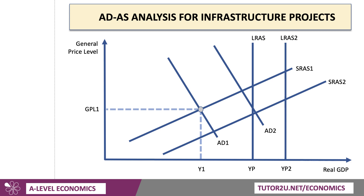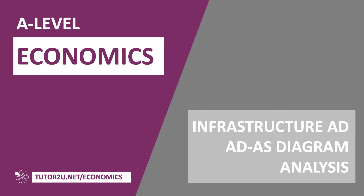Infrastructure also increases the productive capacity of the economy, shifting out long-run aggregate supply. So we've got three shifts in the curves. This allows the economy to operate at a higher equilibrium national income — Y2 — and the general price level might even be a little lower. This shows that infrastructure projects can be non-inflationary: yes, they add to demand, but they also increase supply potential and reduce supply costs. A great ADAS diagram for showing infrastructure as a supply-side fiscal policy stimulus to economic growth.